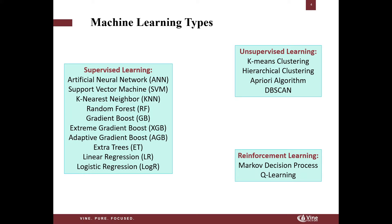On the unsupervised side, K-means clustering is used extensively in the oil and gas industry, especially for facies classification. Hierarchical clustering is another one. DBSCAN density-based clustering is also pretty powerful, especially if we're not sure how many clusters to choose. On the reinforcement learning side, we have Markov decision process and Q-learning. Today I want to talk about ANN and support vector machine and show a case study on how we used these two techniques to get insights from our completions dataset.